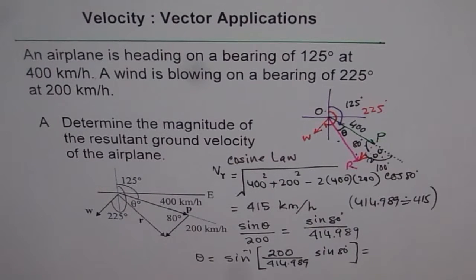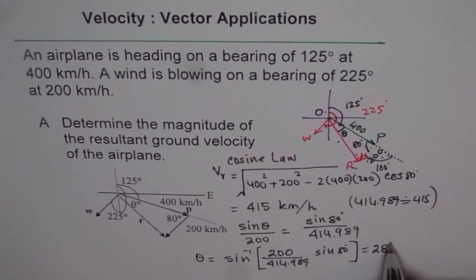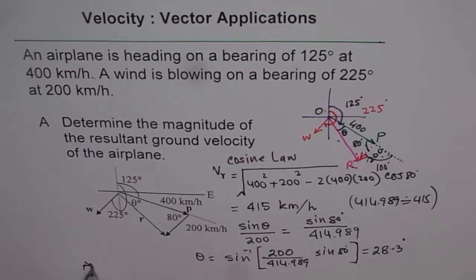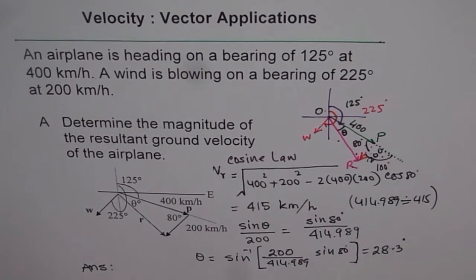So most calculators have second function as sine inverse, and then you put brackets: 200 divided by 414.989 times sine of 80 degrees. And then you get your answer, which is 28.334. So I will round this to 28 now. So it was 28.3, let's say 28.3 degrees. So that is what I get as my angle theta. Now as I said, how will you write down your answer? Answer here should be, how much? Let me write here very clearly.